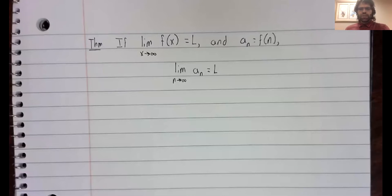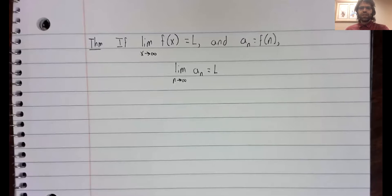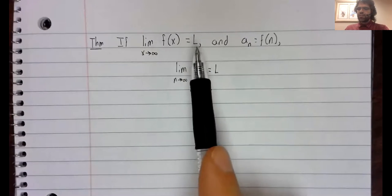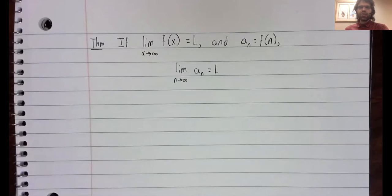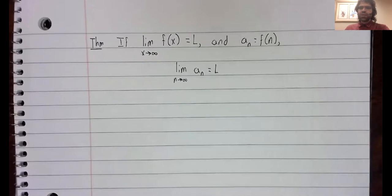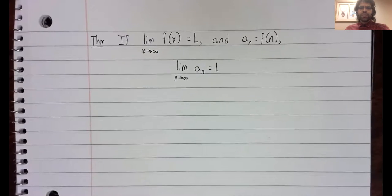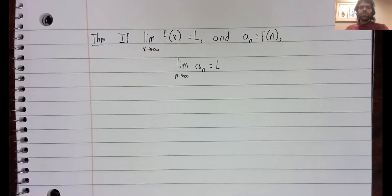Our theorem says that if the limit as x goes to infinity of a function f(x) is finite and equals L, and we use f(x) to define a sequence a sub n equals f(n), then the limit as n goes to infinity of a sub n equals L.